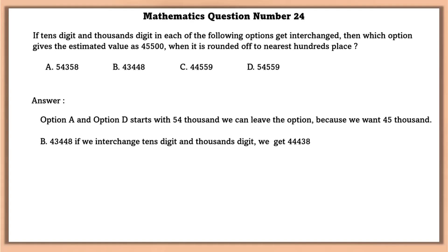Now we can check the B option and the C option. In the B option, if we interchange the 10th and 1000th digit, we get 44,438, which when rounded off is not equal to 45,500. But in the C1, if we interchange the 10th and 1000th digit, we will get the value as 45,549, which can also be written as 45,500.